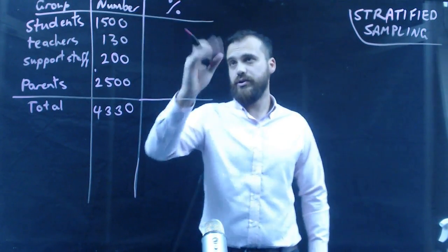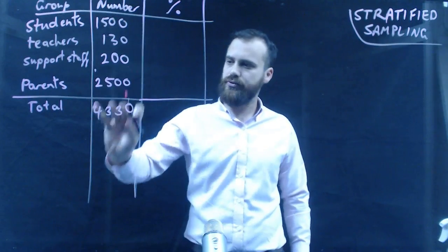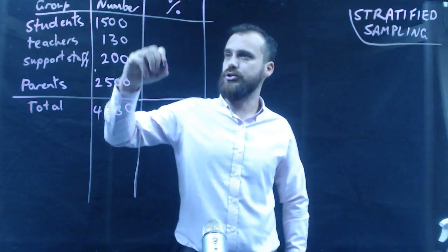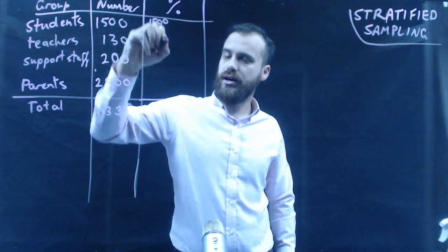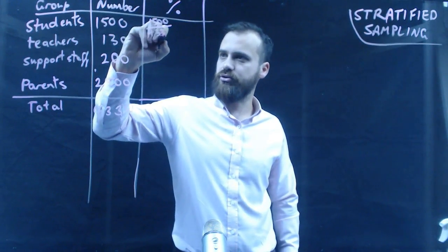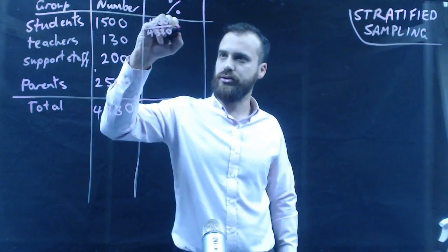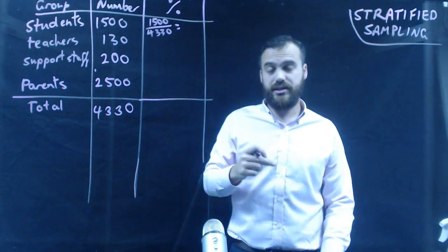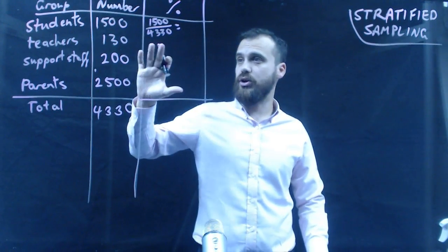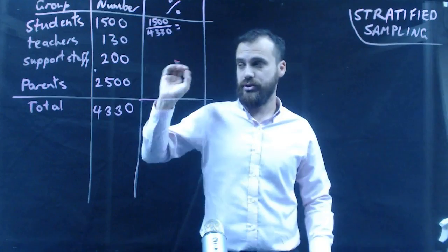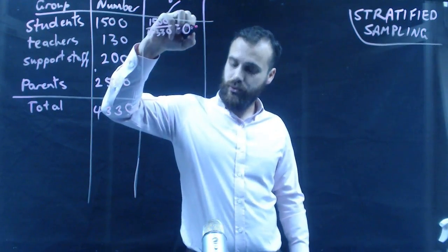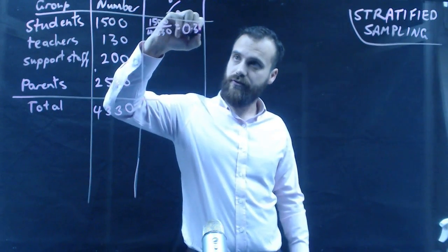So the way to do this is to figure out what percentage of the total each of these groups is. So, for instance, let's look at the students. The students are 1,500 of them. If we divide that by 4,330, which is the total, we'll get a decimal number, which we can convert to a percentage, which will tell us what percentage of the total that the students are. So I get a decimal number of 0.3464.